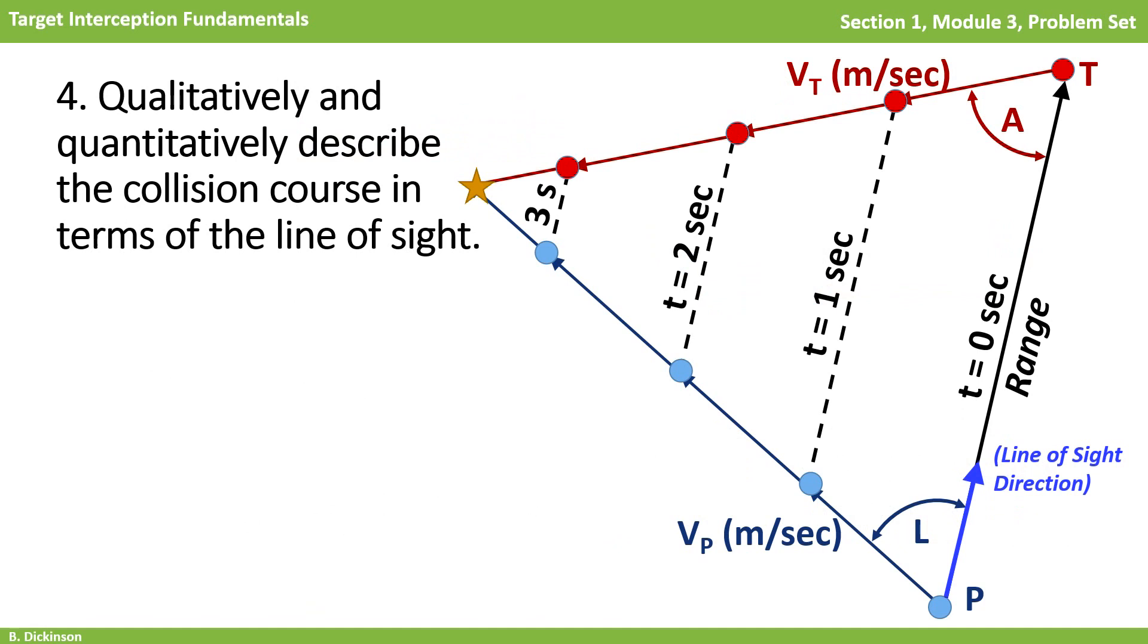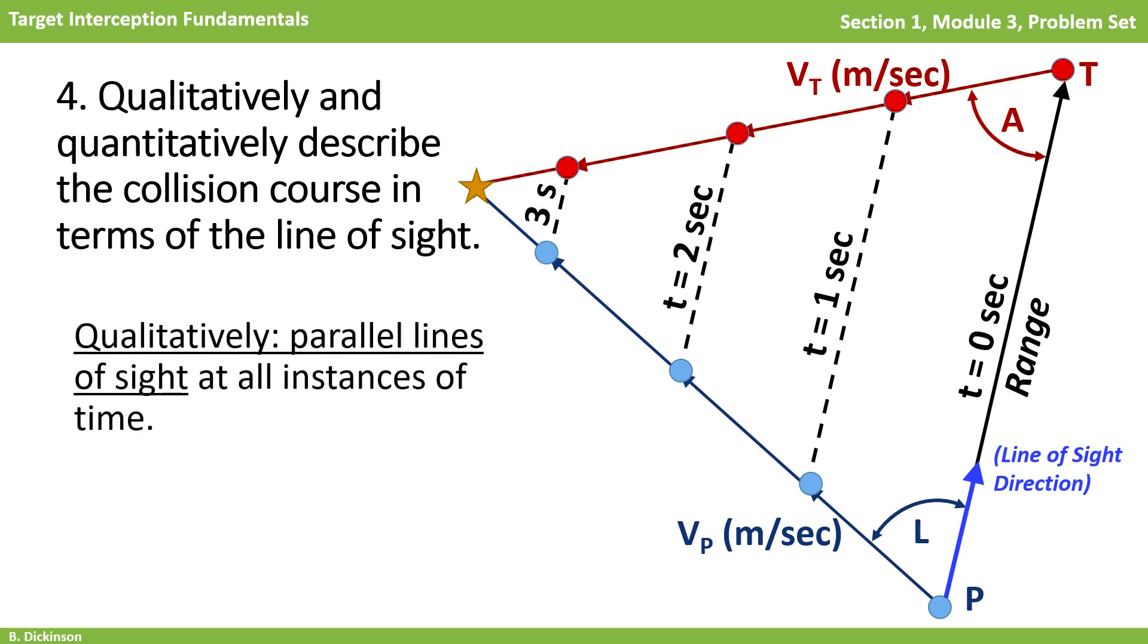In problem four, we needed to qualitatively and quantitatively describe the collision course in terms of the line of sight. Take a look at the collision triangle. What do you observe? Yes, it's fairly obvious. The range vector orientation does not change as time increases. And it follows, then, that the line of sight direction remains constant. Therefore, qualitatively, we can say that lines of sight are parallel at all instances of time.